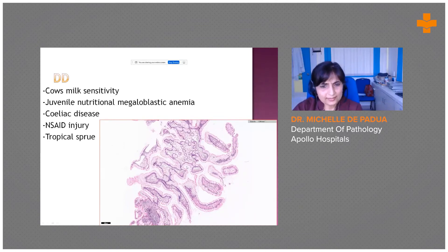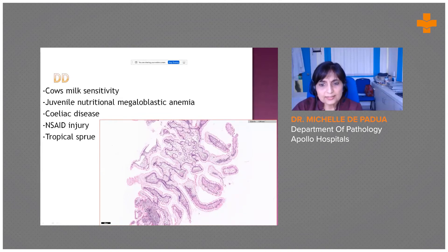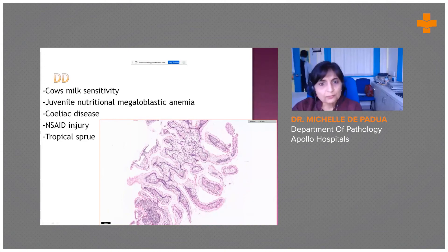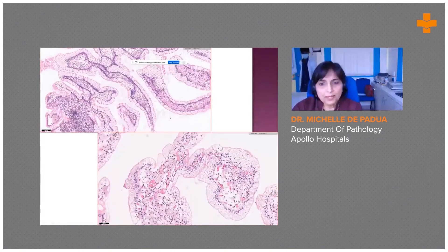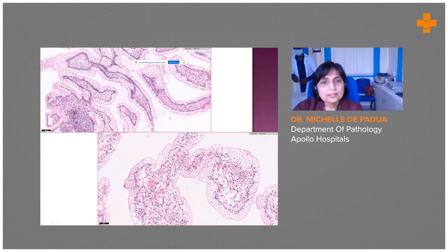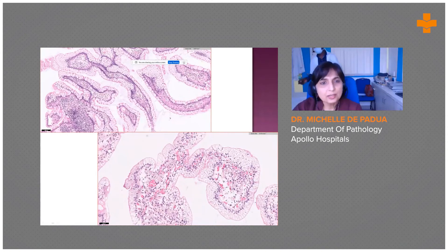Here is another duodenal biopsy I pulled out for comparison — a duodenal biopsy from an adult with ulcerative colitis. On the colonic biopsies there is a lot of vacuolation in the enterocytes.